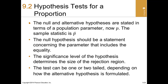The null and alternative hypotheses are stated the same way we do for the mean. The null hypothesis should be a statement concerning the parameter that includes equality. We specify the significance level, and the test can be one-tailed or two-tailed depending on the hypothesis we formulate.